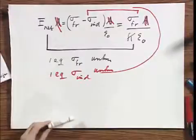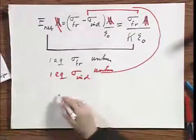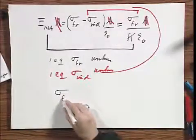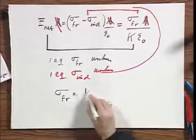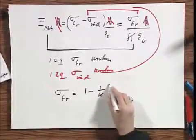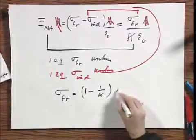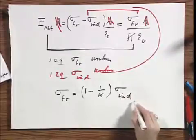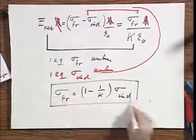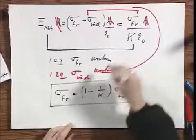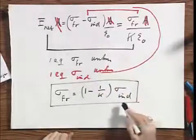If you want to combine them in a clever way, if you like that, it's easy to prove that sigma-free equals one minus one over k times sigma-induced. Don't try to remember that, but that's what will follow from these results. So, due to the dielectric, the net electric field is reduced. And so, if I summarize the situation,